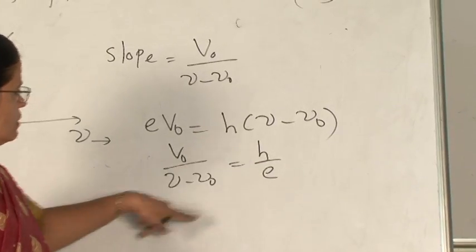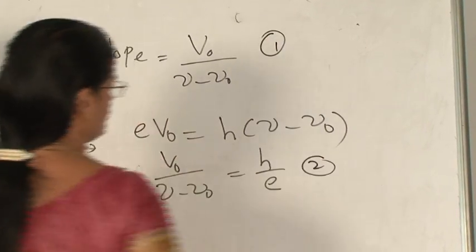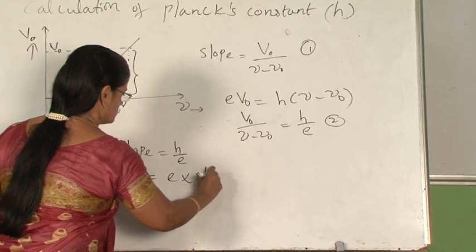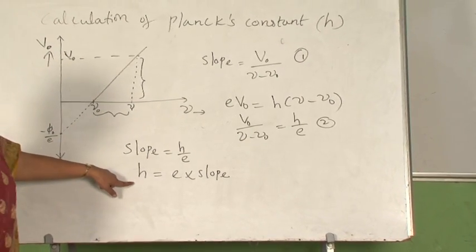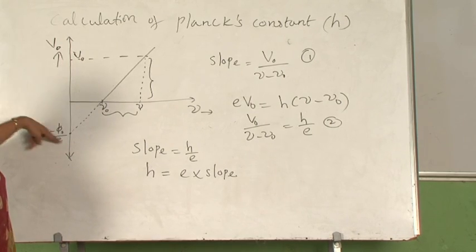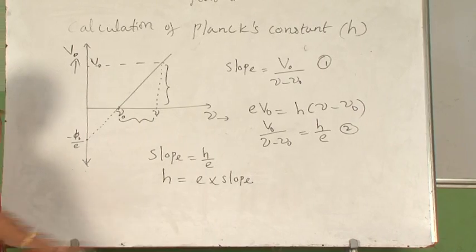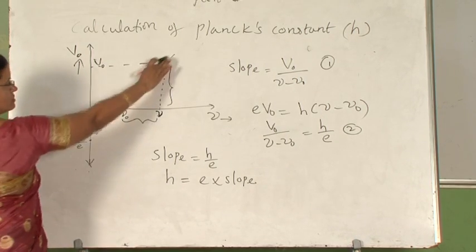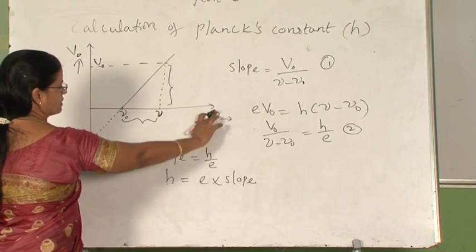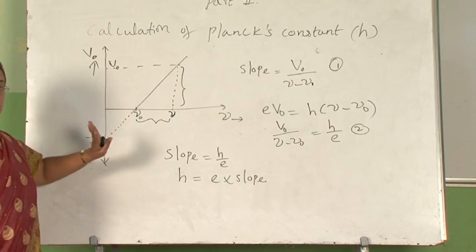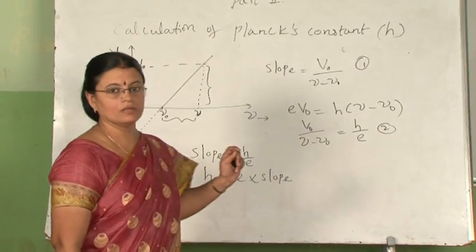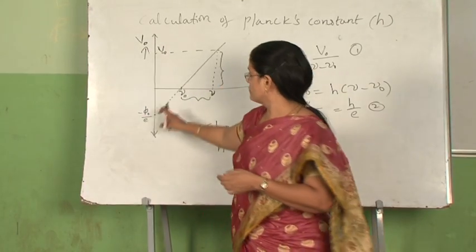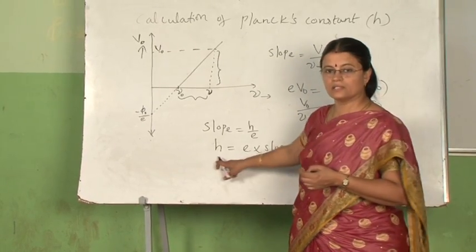You can verify this by cross multiplication. From equations 1 and 2, we can write: slope equals h/e, or h equals e times slope of the graph. So from this, we can calculate Planck's constant. In the board exam, this particular graph is very important — they will ask you to draw it, may give some values, and ask you to get the threshold frequency and calculate Planck's constant from the graph. The x-axis intercept gives threshold frequency, and from the slope we can calculate h easily using this formula.